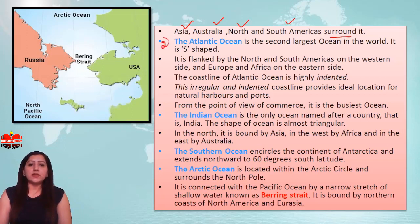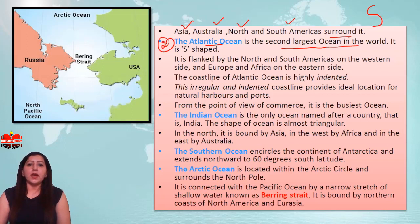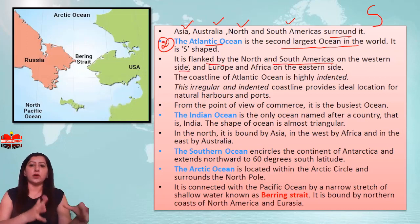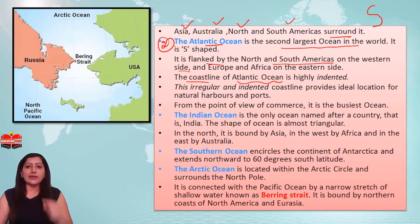The Atlantic Ocean is the second largest ocean in the whole world, and its shape is like the letter 'S'. It is flanked by North and South America on the western side, and Africa on the eastern side. The boundary between the ocean and the land is called the coastline.